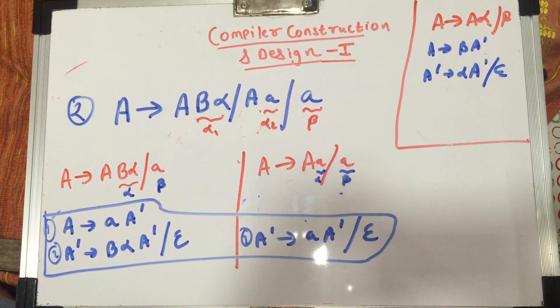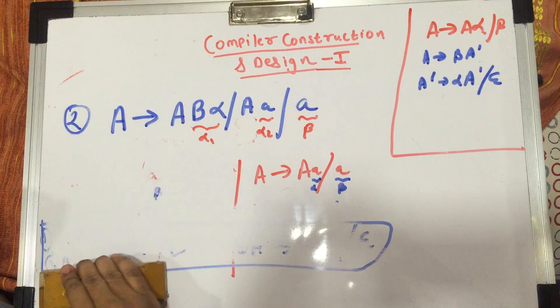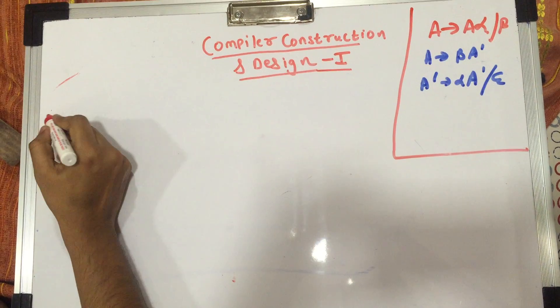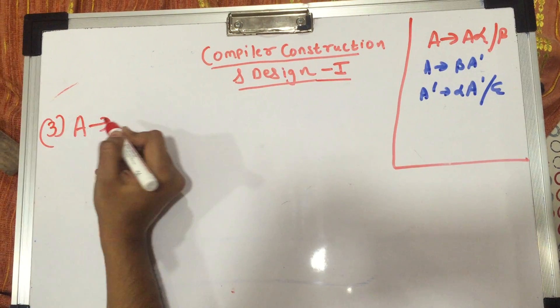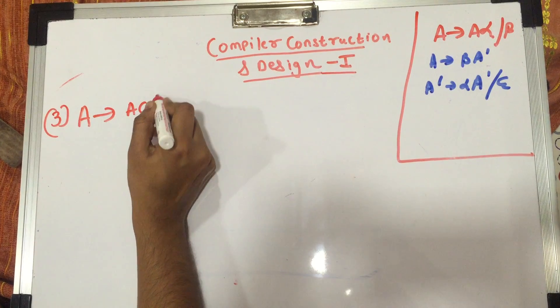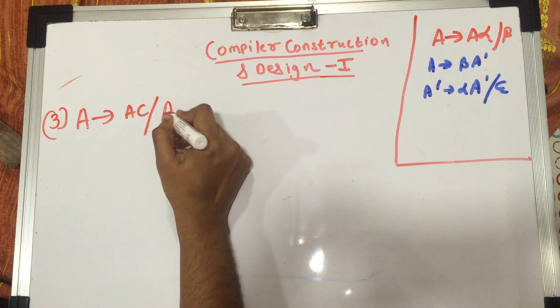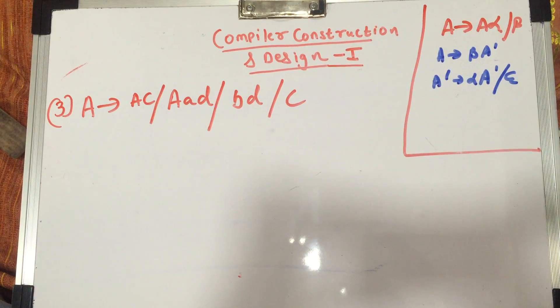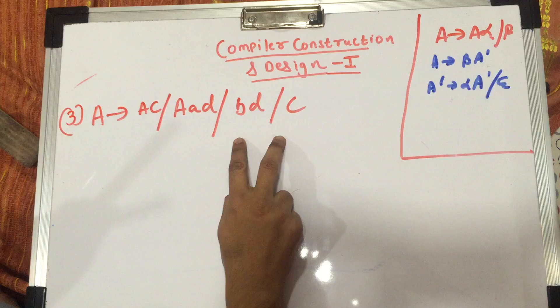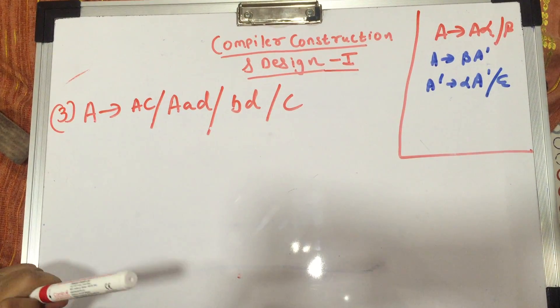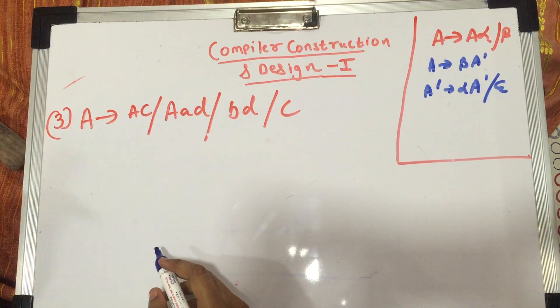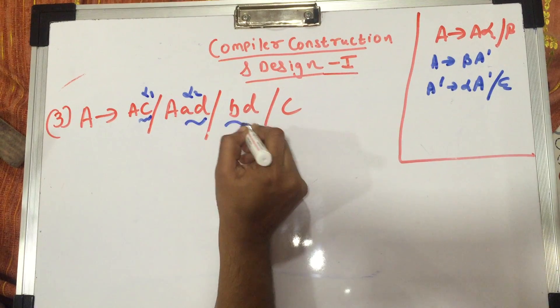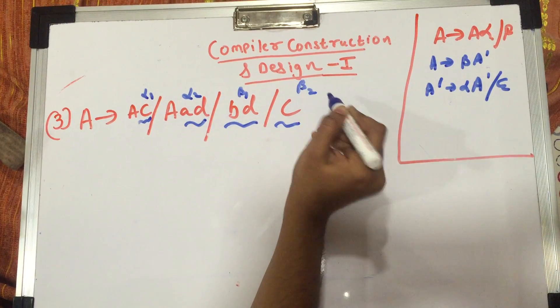Okay, moving on, one more last example just to make things even more clearer. We'd be taking the third example, that is A gives AC slash AAD slash BD slash C. So now here we have two betas and two alphas, so I want you to identify it with me, what the betas and alphas are. So this is my alpha 1, alpha 2, beta 1, and beta 2.